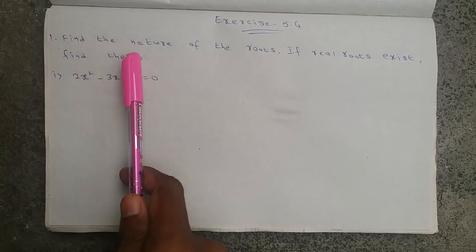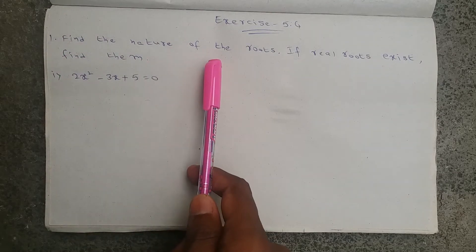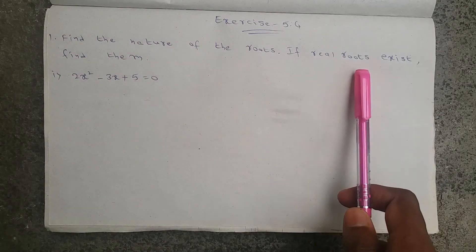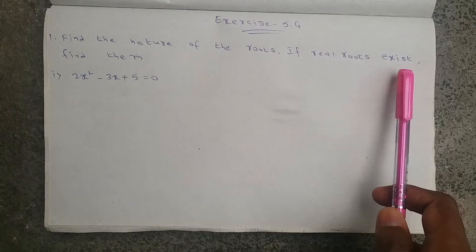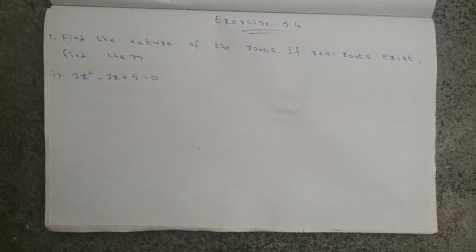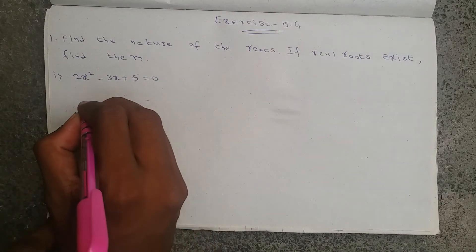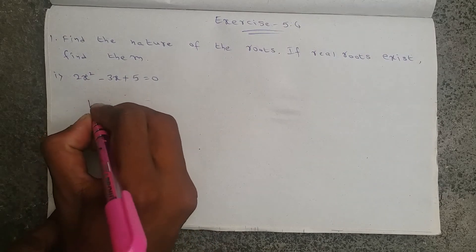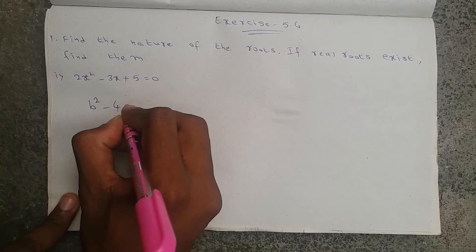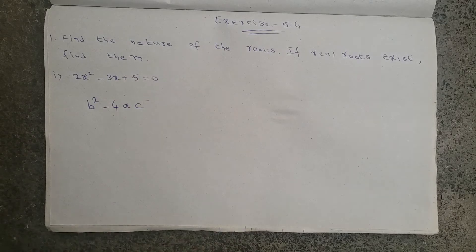The first bit is: find the nature of the roots. If real roots exist, then find them. First let us find the nature of the roots. The formula we are going to use is b² - 4ac.